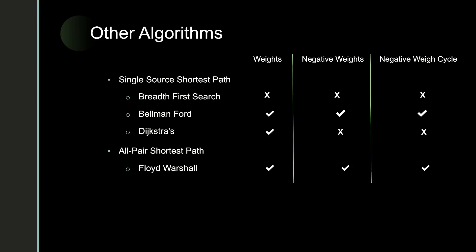The second classification is all pair shortest path algorithms. Floyd-Warshall is one such example and uses dynamic programming to calculate the shortest path from all vertices to all other vertices.